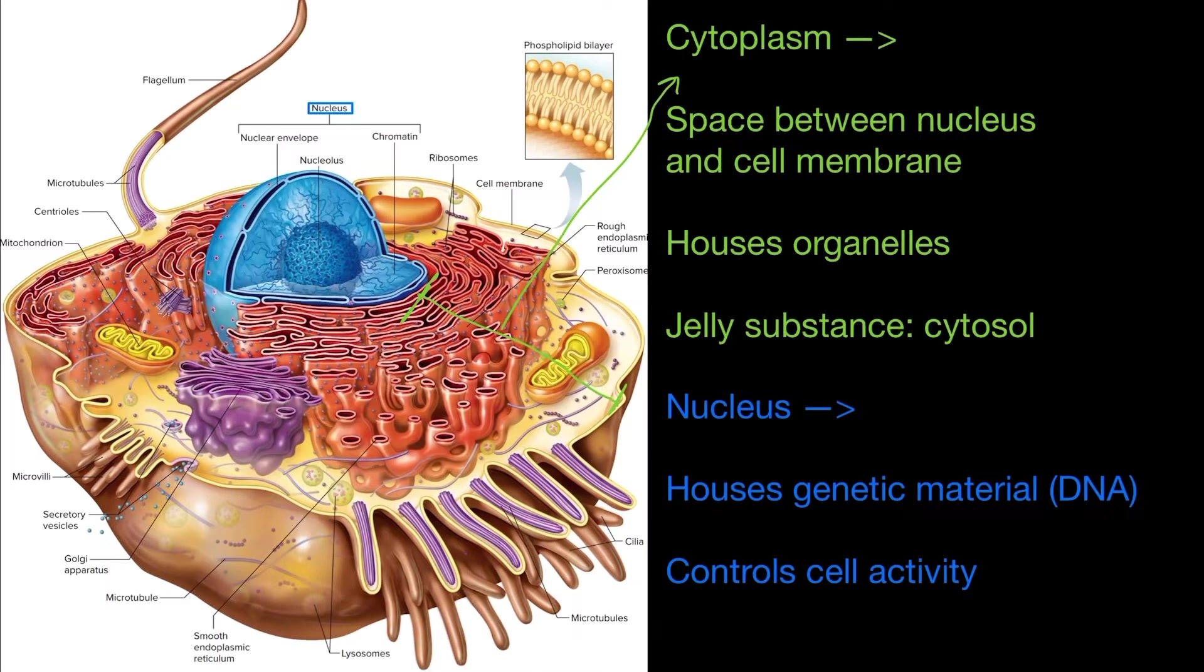In this video we're going to talk about the structures of a human cell. This right here is a picture of Schrodinger Ideal Cell that includes a lot of the structures that different cells have.